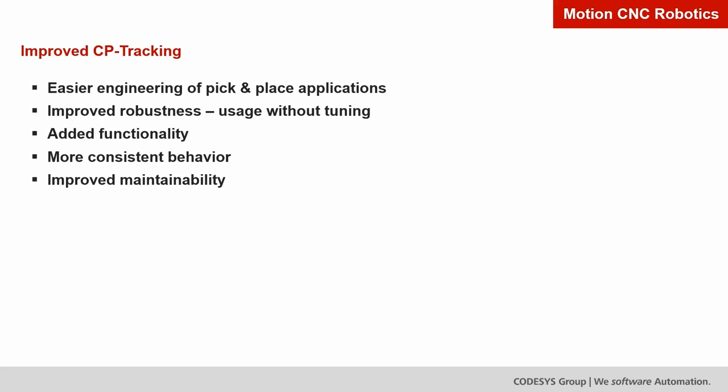The major part of version 4.11 of Soft Motion is the improvement of CP tracking. CP stands for continuous path — in contrast to point-to-point robotics movement where interpolation occurs in axis space, CP has interpolation in Cartesian space. In the context of tracking, the coordinate system can be moving, like a moving belt, and the robot must synchronize or execute movement relative to this moving coordinate system. These coordinate systems can change during movement as well. This was possible in former versions but needed more tuning, making it more complicated for the application engineer.